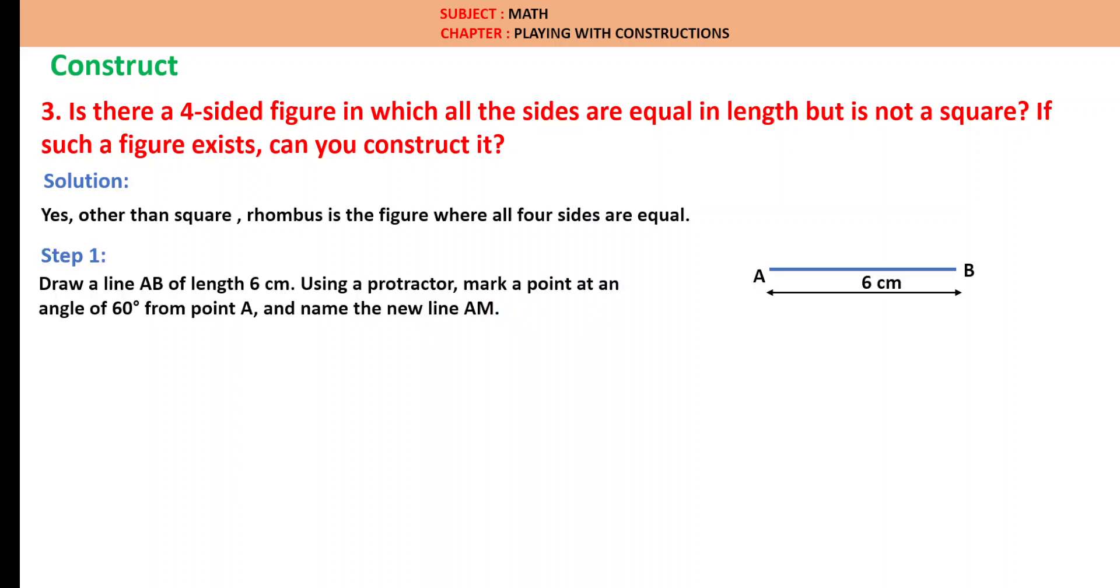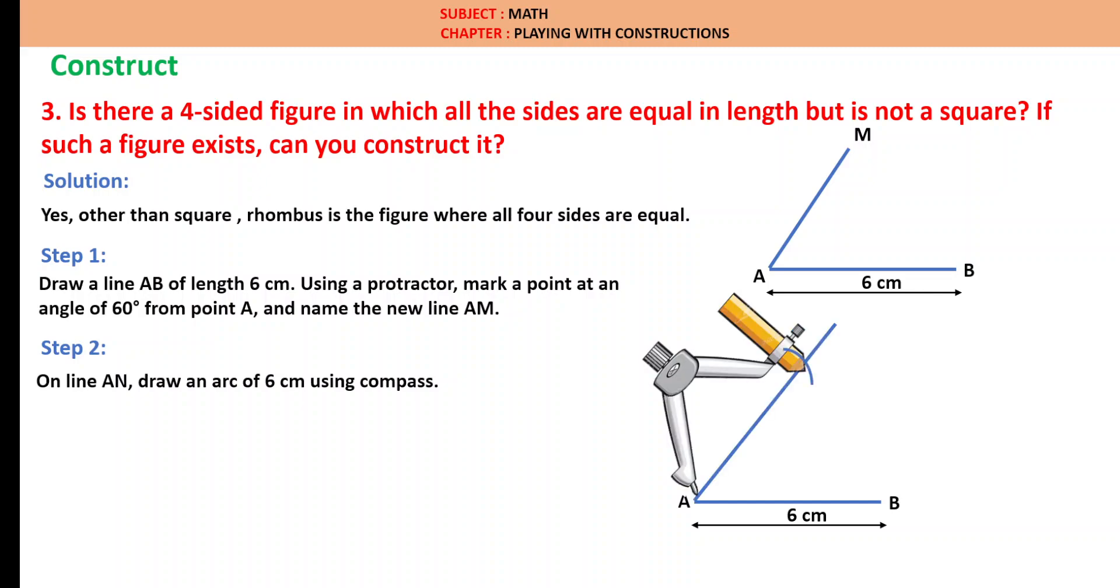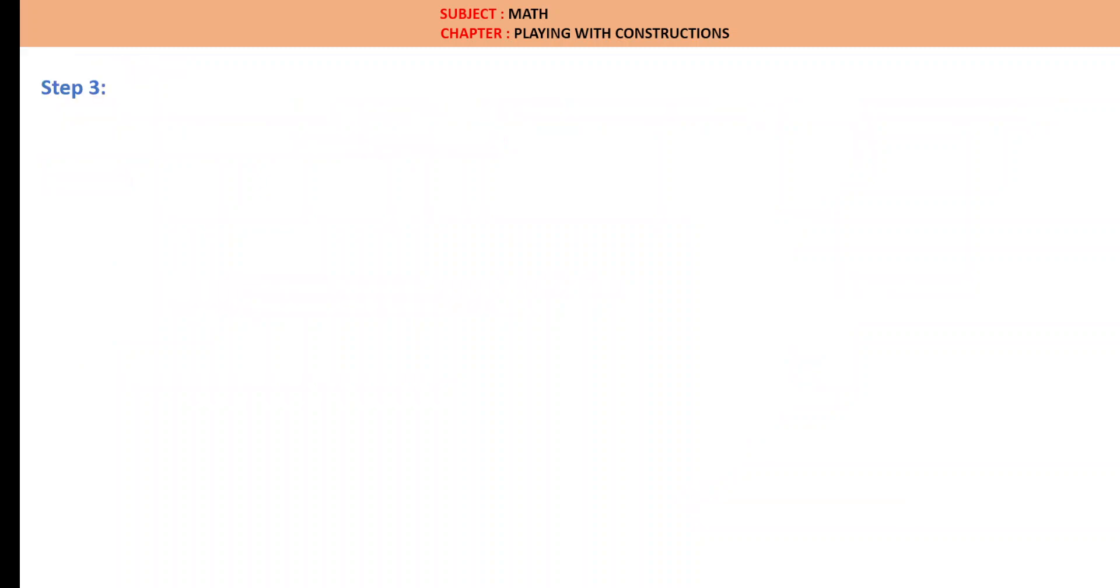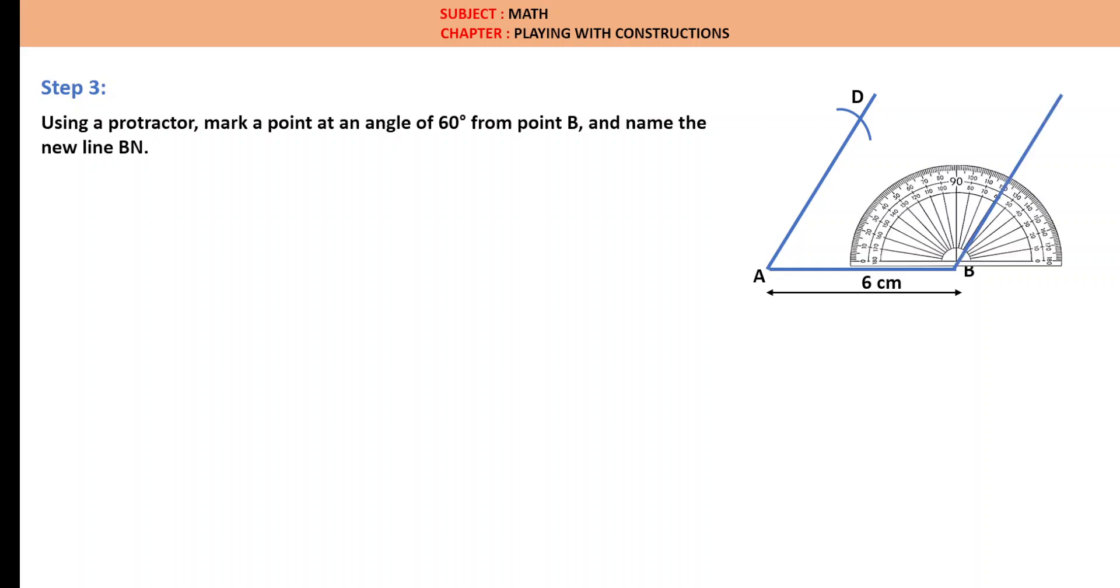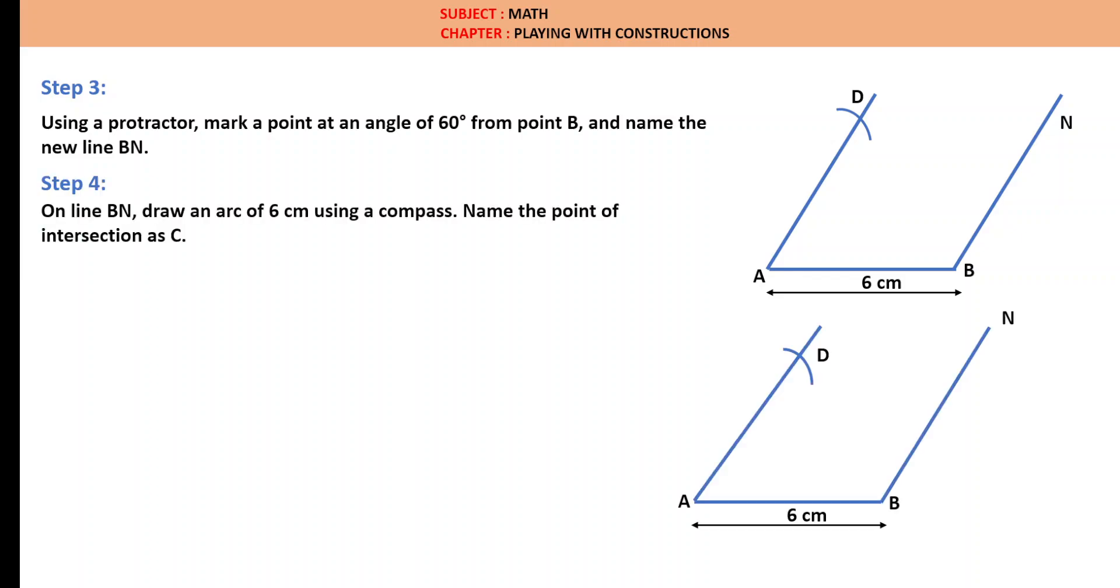Step 1: Draw a line AB of length 6 cm. Using the protractor, mark a point at an angle of 60 degrees from point A and name the line as AM. We are taking the protractor, marking 60 degrees, marking this point as M. Step 2: On line AM, draw an arc of 6 cm using the compass. Using the protractor, mark a point at an angle of 60 degrees from point B. Let us notate this new line as BL.